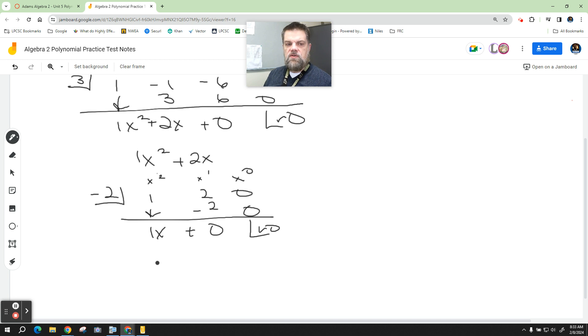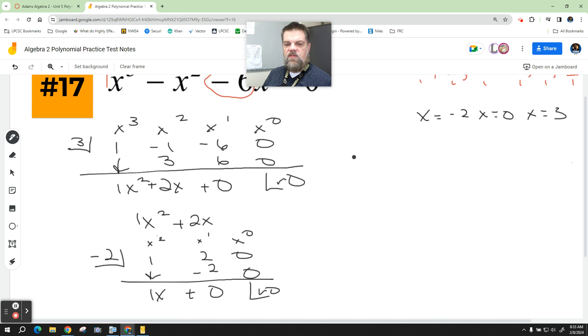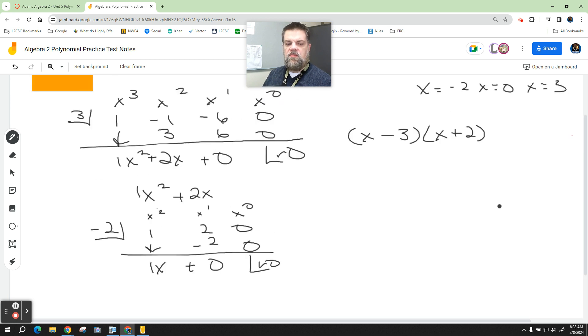So those are the two solutions. So remember that if these are the solutions, then my factors are x plus—I'm sorry, you've got to do the opposite. It's x minus 3 times x plus 2. And then way down here at the bottom, I'm left with just x. So I would say x equals 0. So this last x, this one right here, I could just say x equals 0. And that's your third solution.